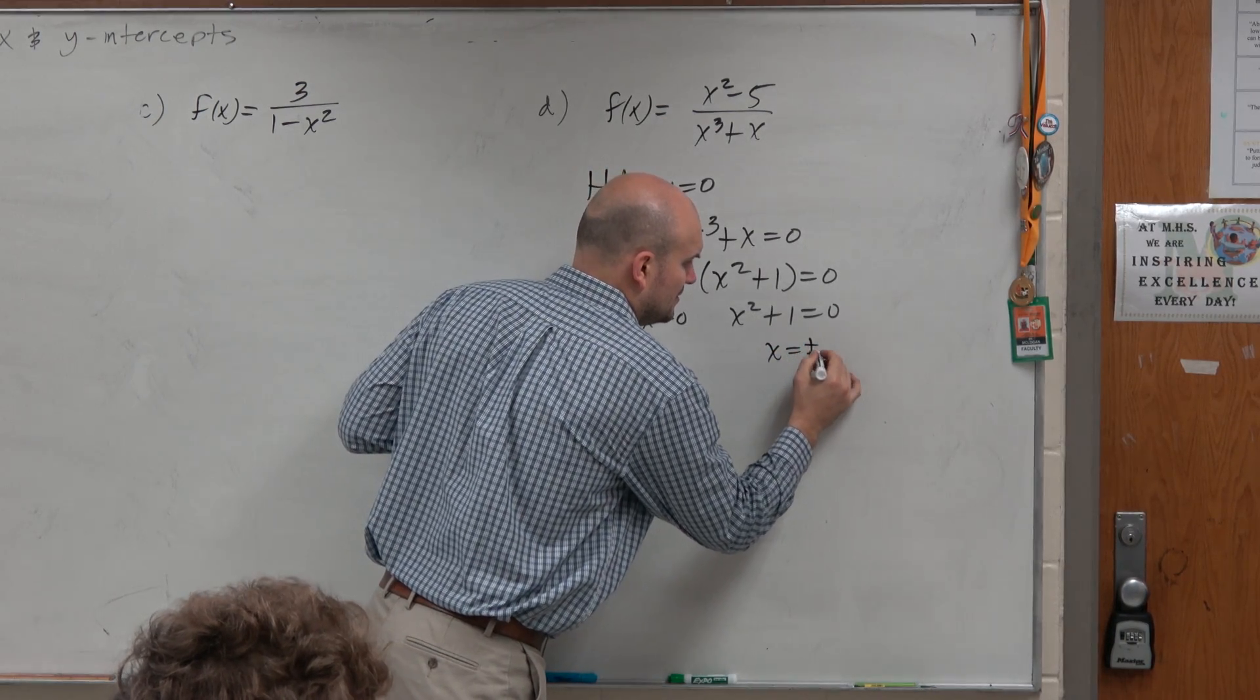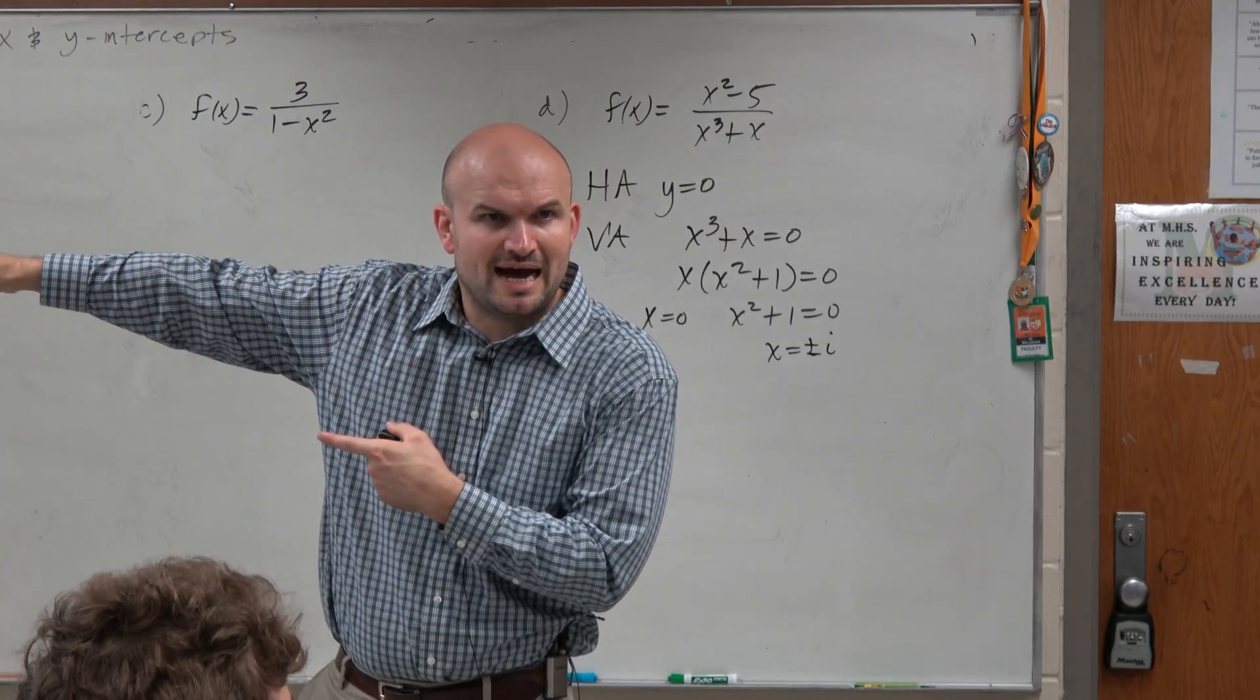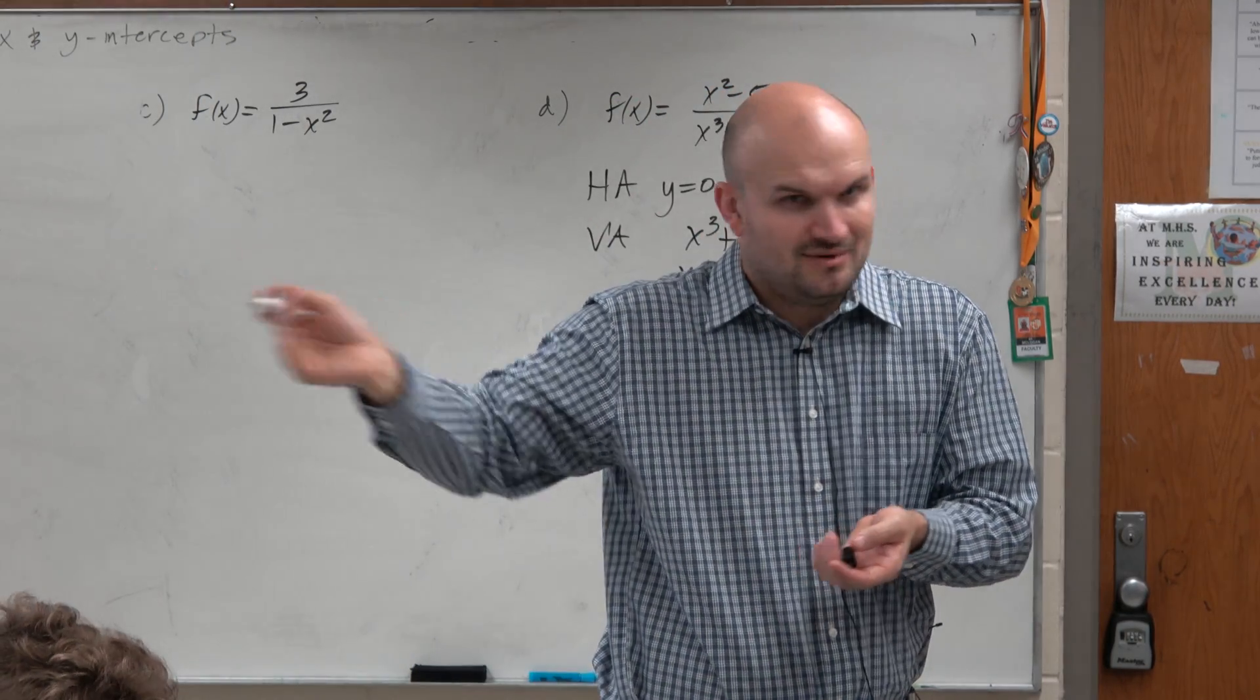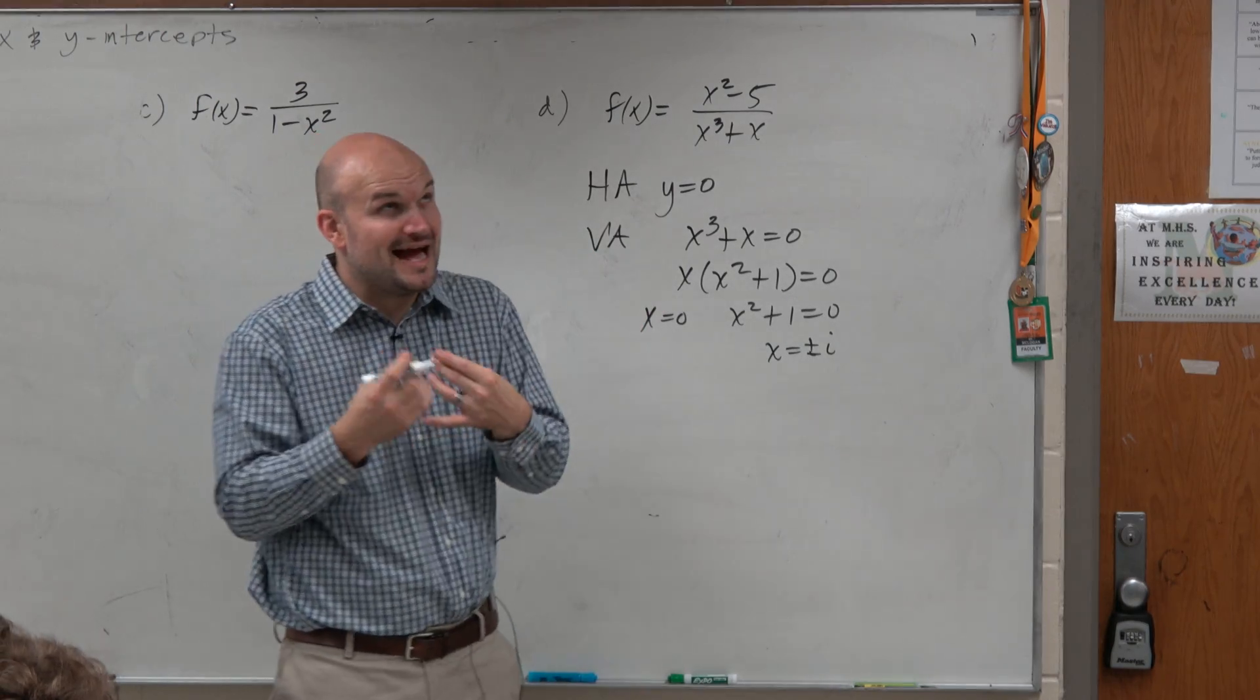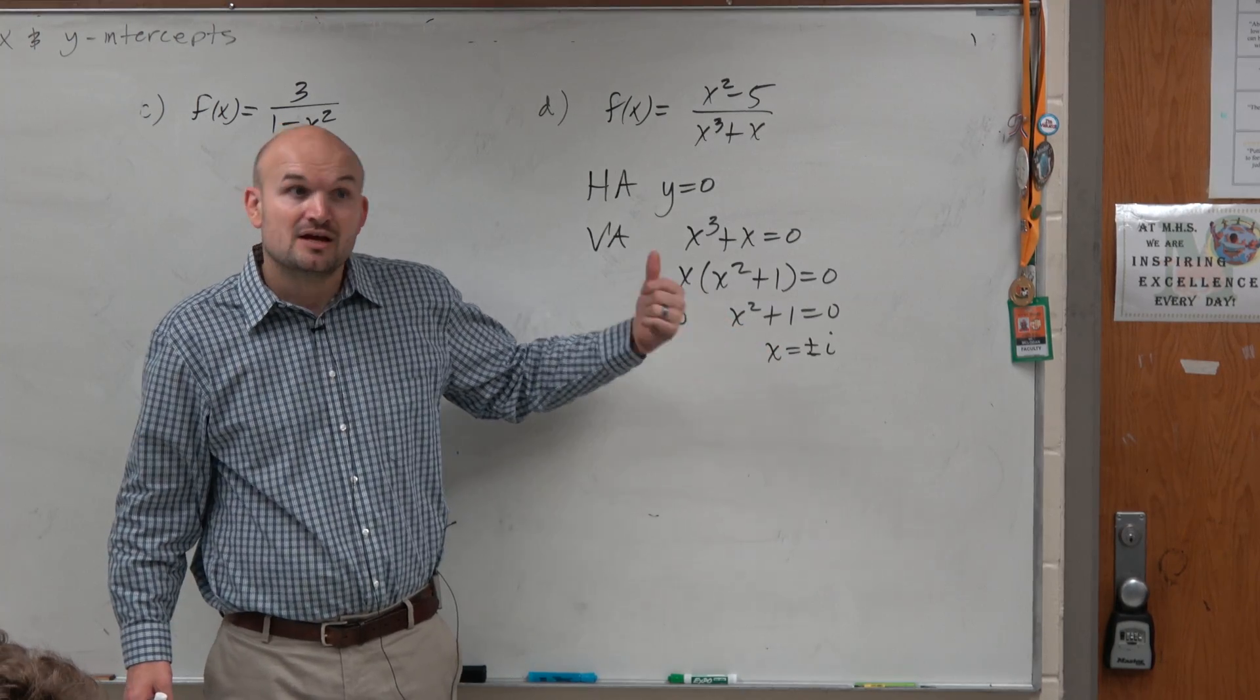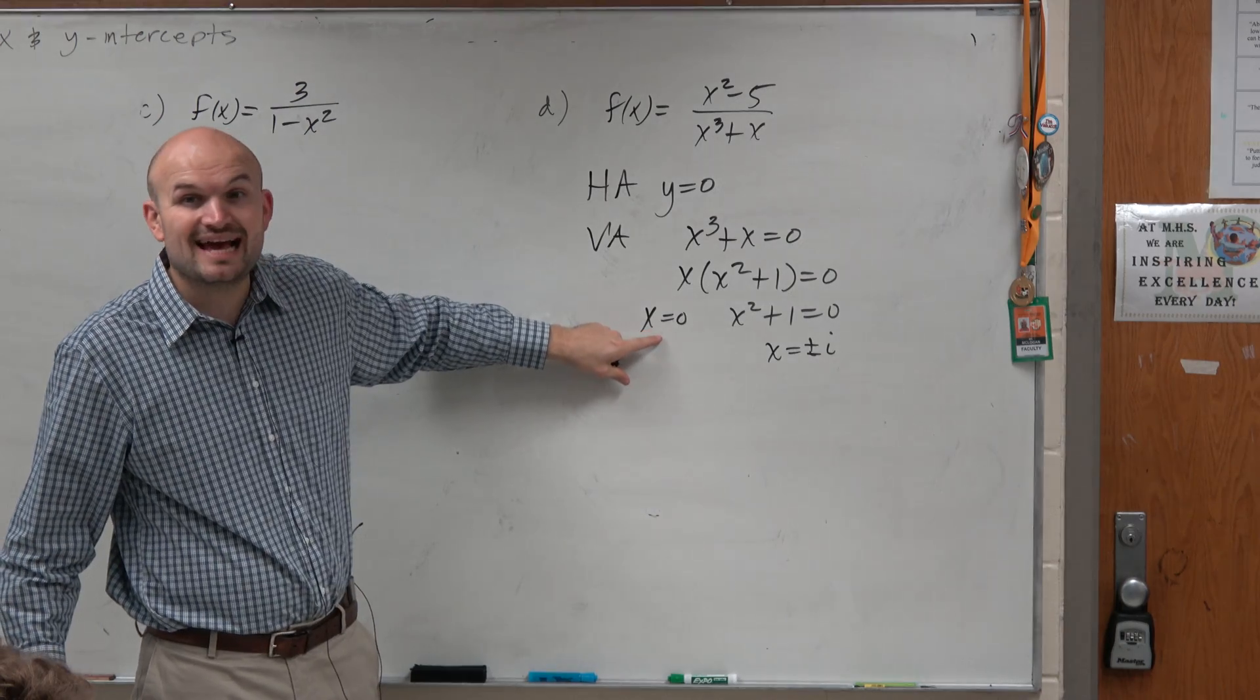Have you guys seen any vertical asymptotes at i? No, because you can't graph that on a coordinate grid. Right? When we're looking for the vertical asymptotes, guys, we're looking for the real values. We're not concerned about complex numbers here. OK? So what that means is there's only one real vertical asymptote, and that is at x equals 0.